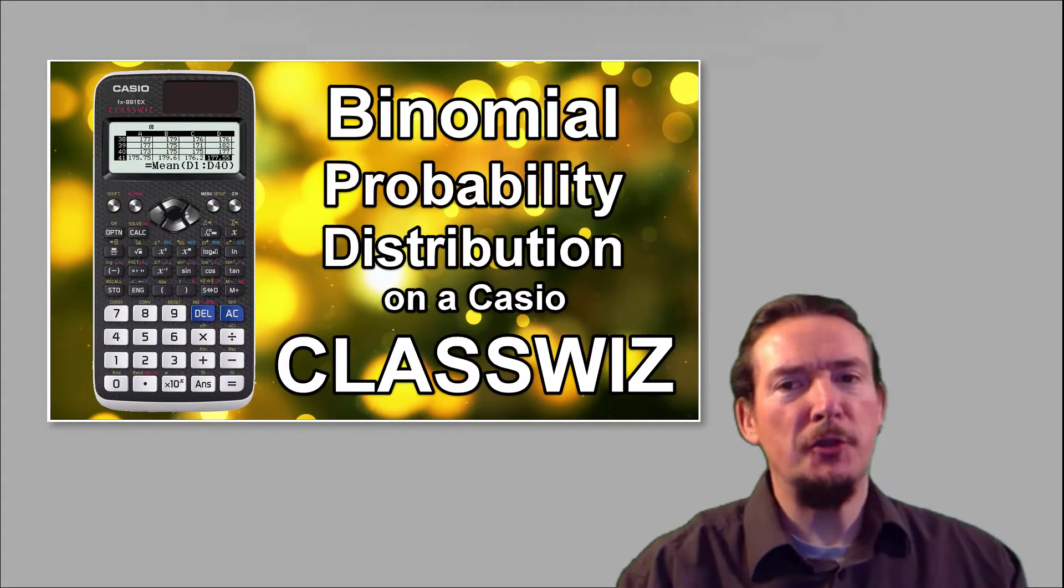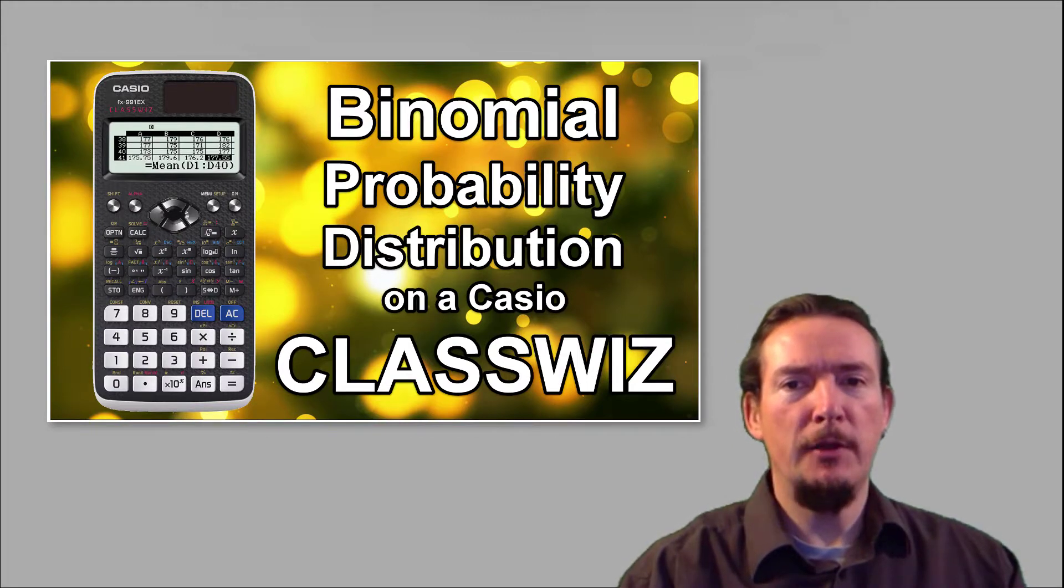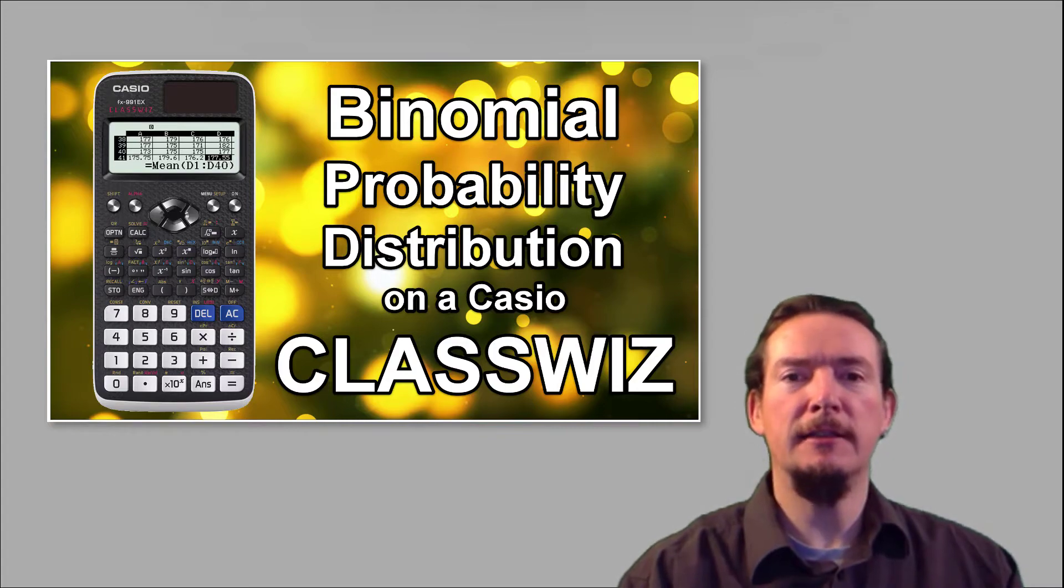We are looking at the binomial distribution today, which you will find on the old S1 statistics and probability paper and also the new 2017 specification AS and A level.